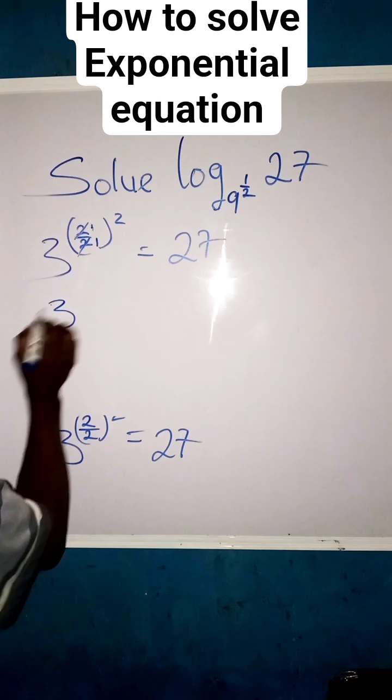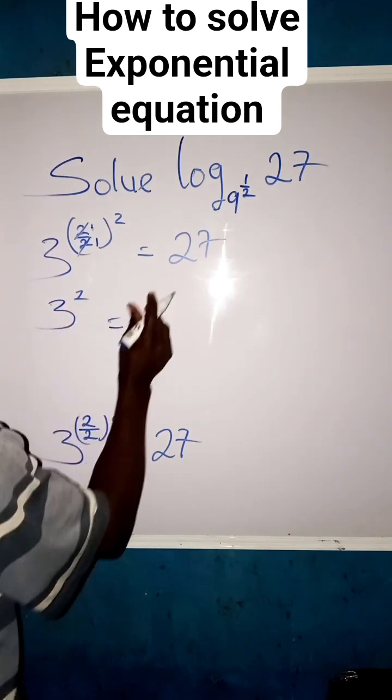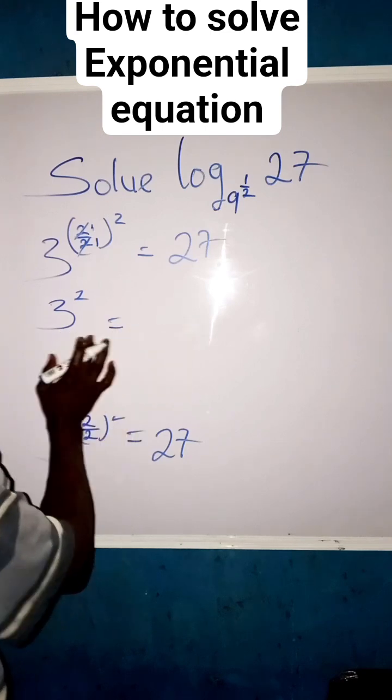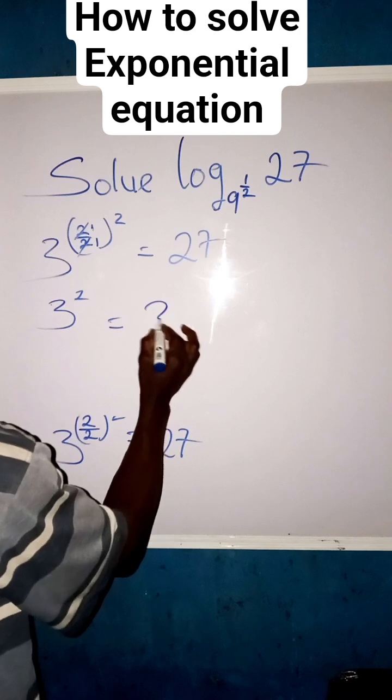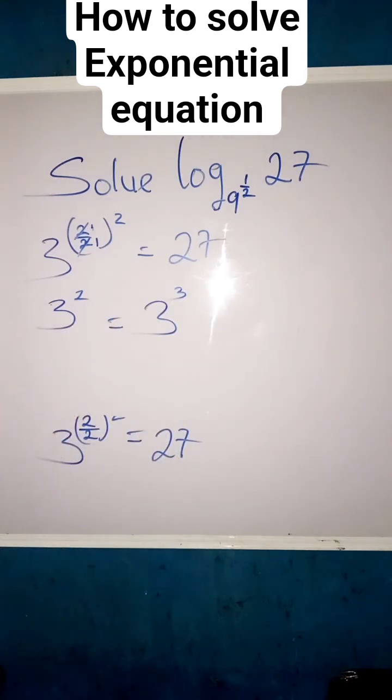So now 3 to power z equals to... can we also write 27 that we have a power of 3? Yes we can. 3 raised to power 3. Now if we come to this angle, we can...